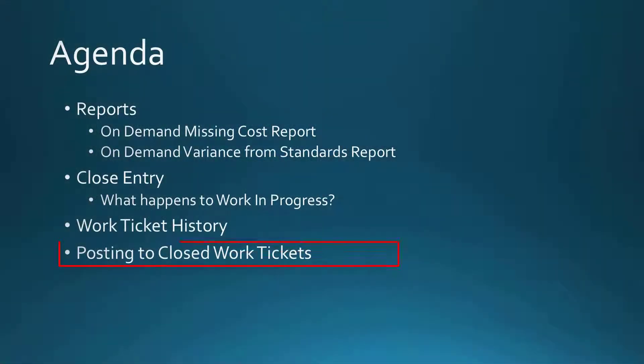Lastly, we're going to talk about posting to closed work tickets. Posting to a work ticket after it's been closed is an option in work ticket class maintenance. You can either allow closed work tickets to have postings made against them, or designate that they won't. Understand that the work ticket is done after it's been closed, so anything you post to it afterwards will not go to work in process — it will go directly to the variance account. However, it will update the history on that work ticket so that in the future you can see the total costs associated with it, including those posted after closing.